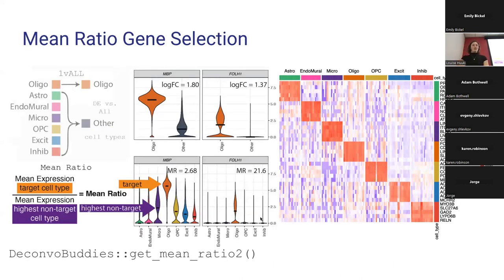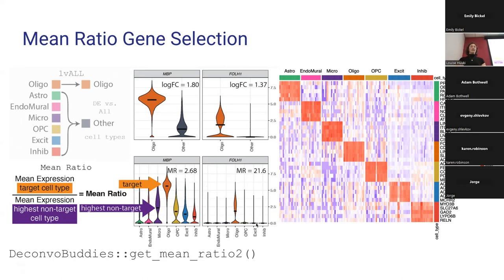Enter our method: mean ratio gene selection. We look for genes where there's a big difference between the target cell type and the second highest cell type. We calculate the ratio of the mean expression of our target cell type divided by the mean expression for the highest non-target cell type. The higher that ratio, the bigger the difference between first and second. For example, MVP has a mean ratio of only 2.6, but FLLH1 has a mean ratio of 21.6. We're able to select really clean, specific genes using this method.